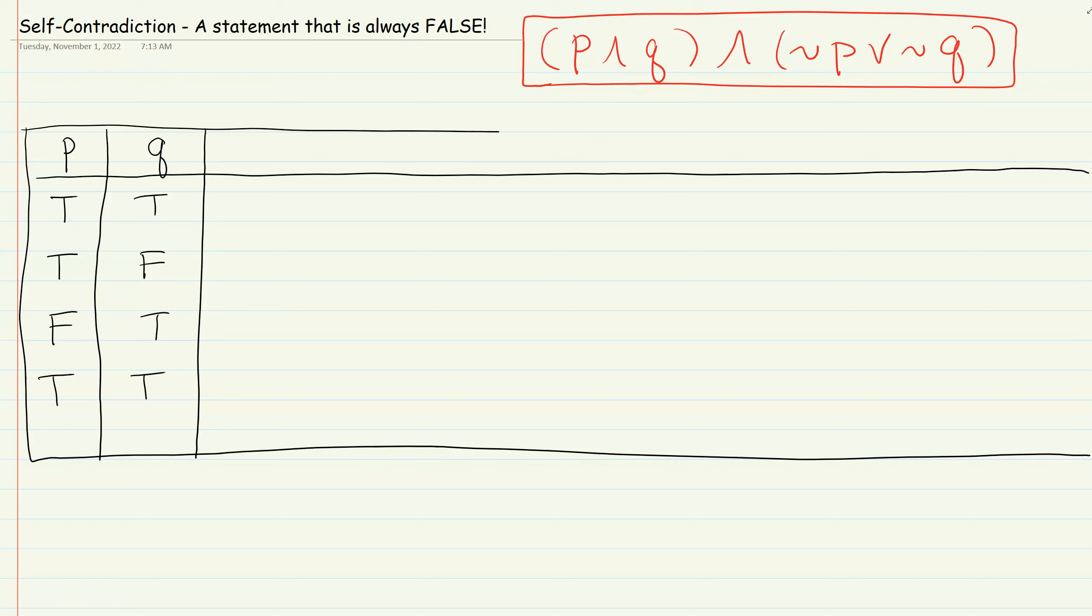And then we're gonna go ahead and look at the order of connectives, which we will go here first, which is the first parentheses. So we would say P and Q, and then we would go over to the other parentheses.